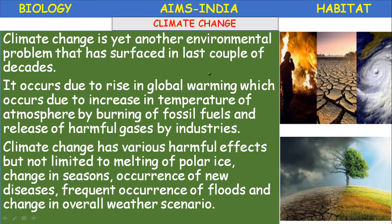Effects of pollution on animals and human beings: about 40 percent of human deaths occur due to air pollution. It increases susceptibility to diseases, causes cancer and genetic mutations, causes respiratory ailments and asthma, hay fever, and allergic diseases. It even causes cardiovascular diseases and neuronal diseases — meaning damage to the central nervous system also takes place due to air pollution.